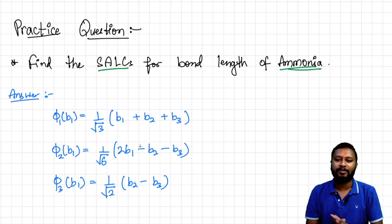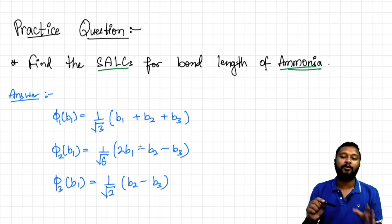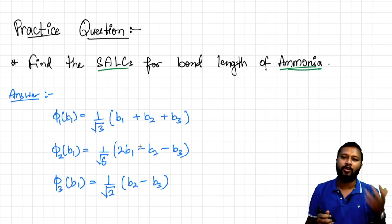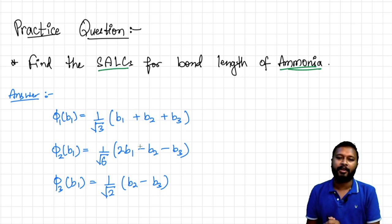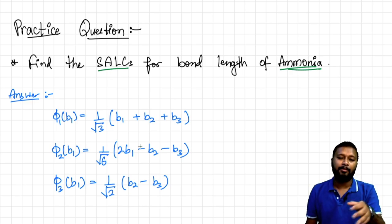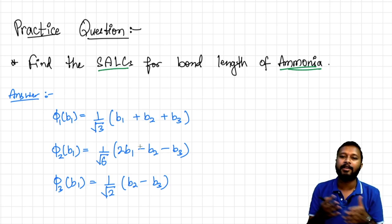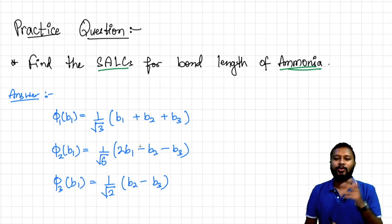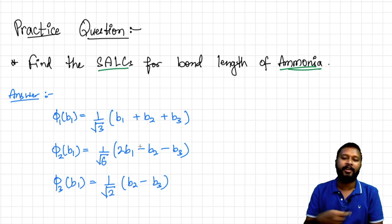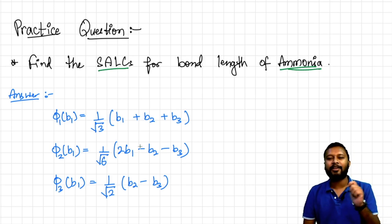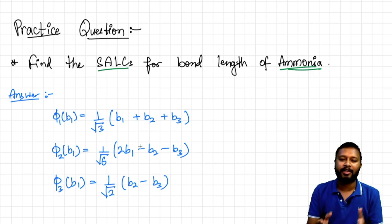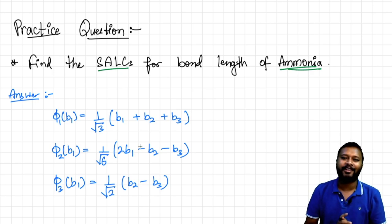The exact answer may vary slightly depending on which bond you label as b1 or b2, so the plus/minus signs might differ a bit. But if you're getting close to the expected answer, you've understood SALCs well. Let me know in the comments if you want more questions or more molecule types solved using SALCs — especially using the projection operator method for ammonia. Thank you so much for watching. If you're new to the channel, do subscribe. If you liked this video, give it a like. See you in the next video!